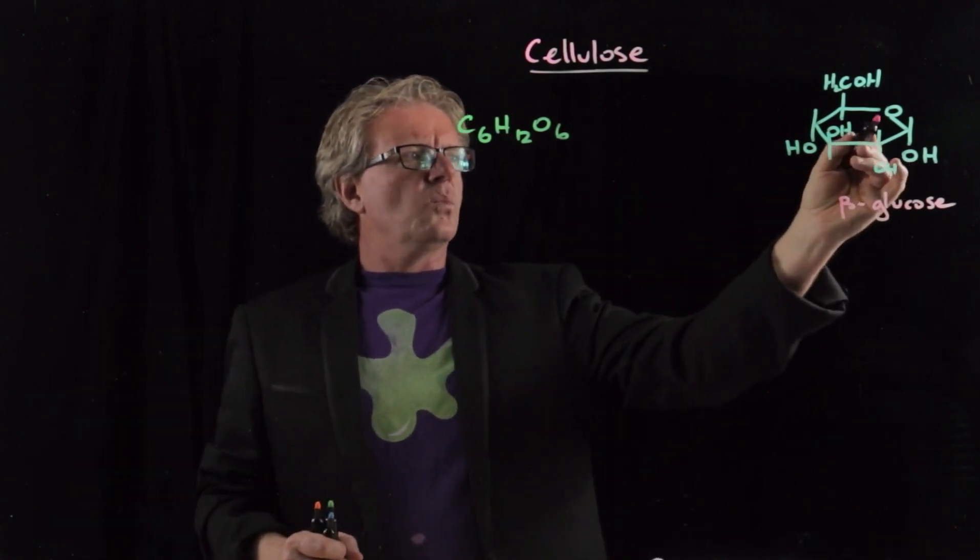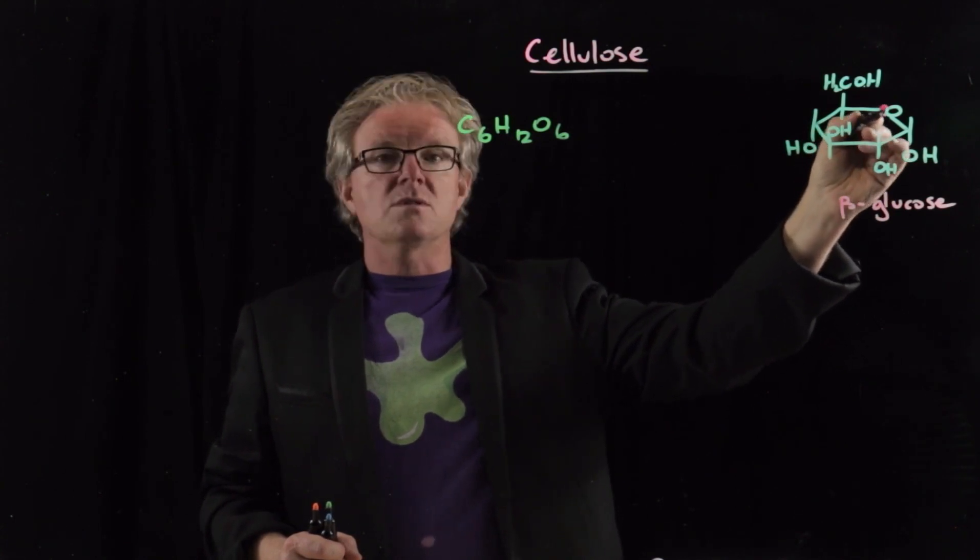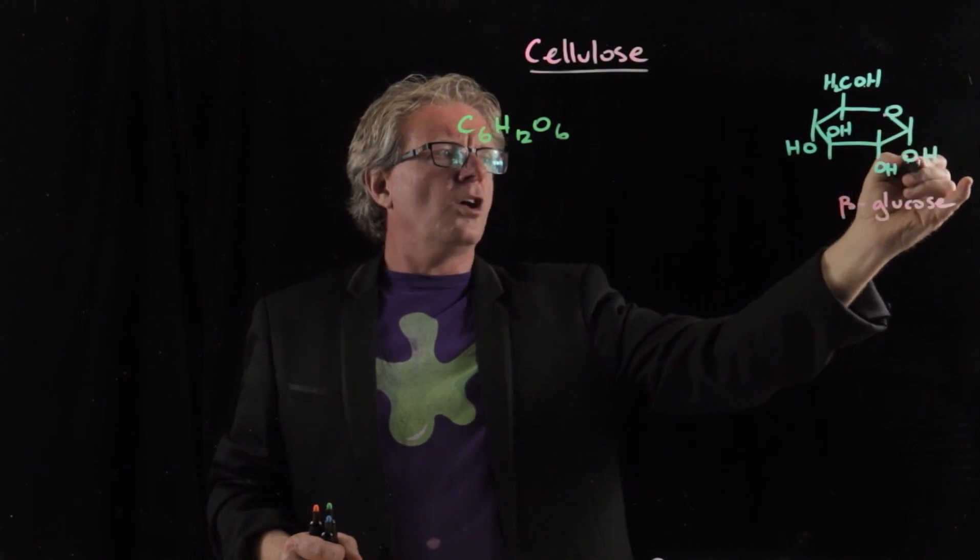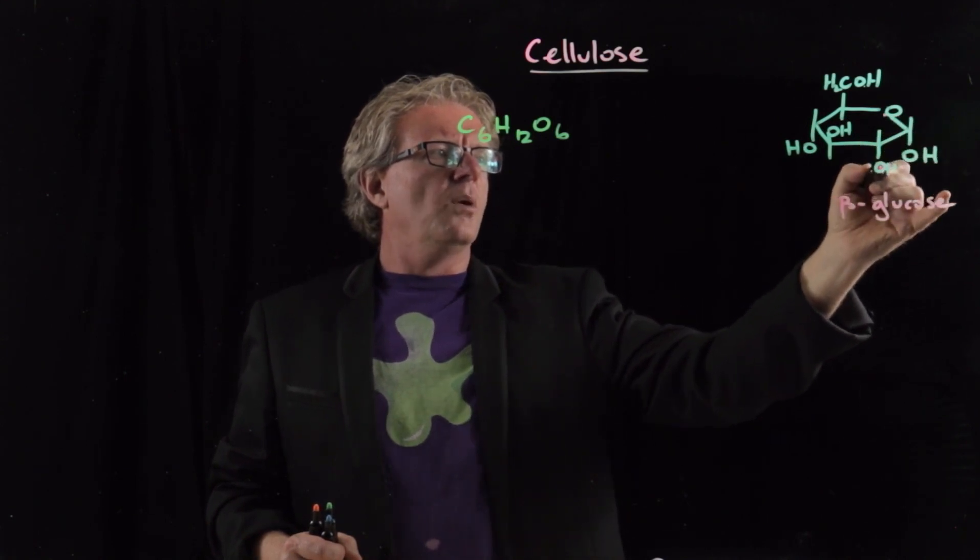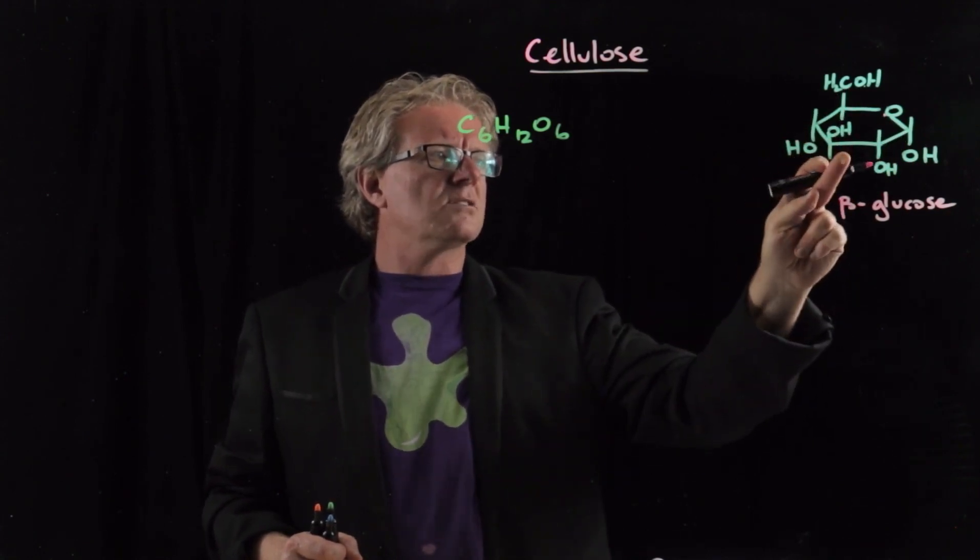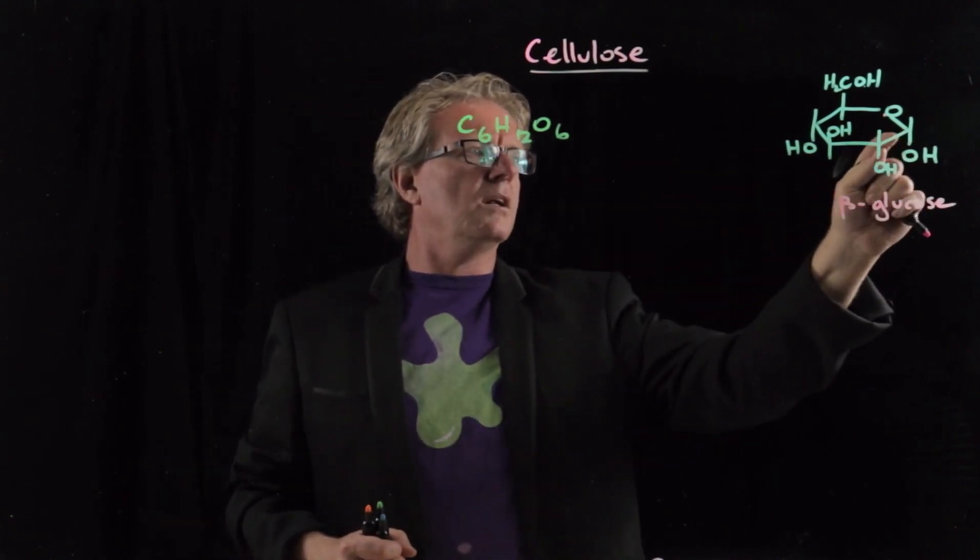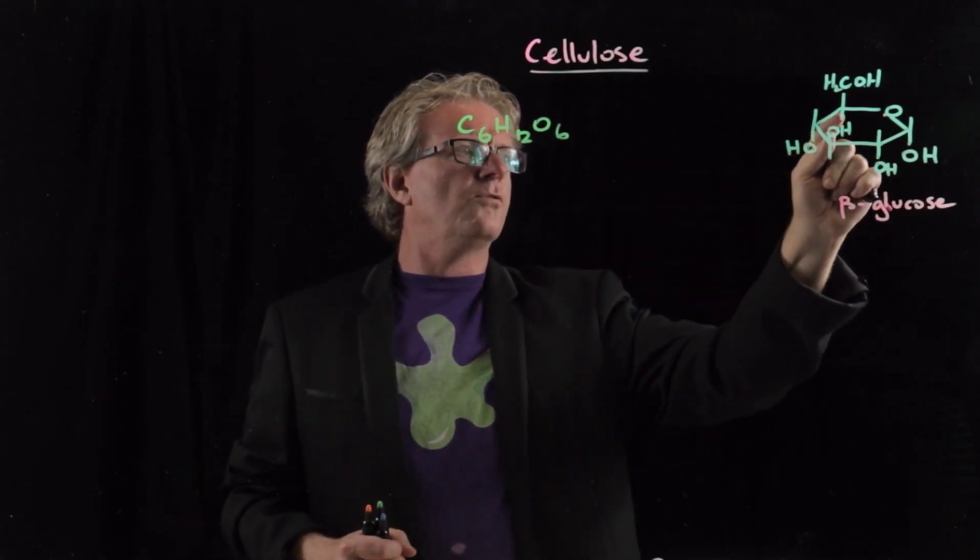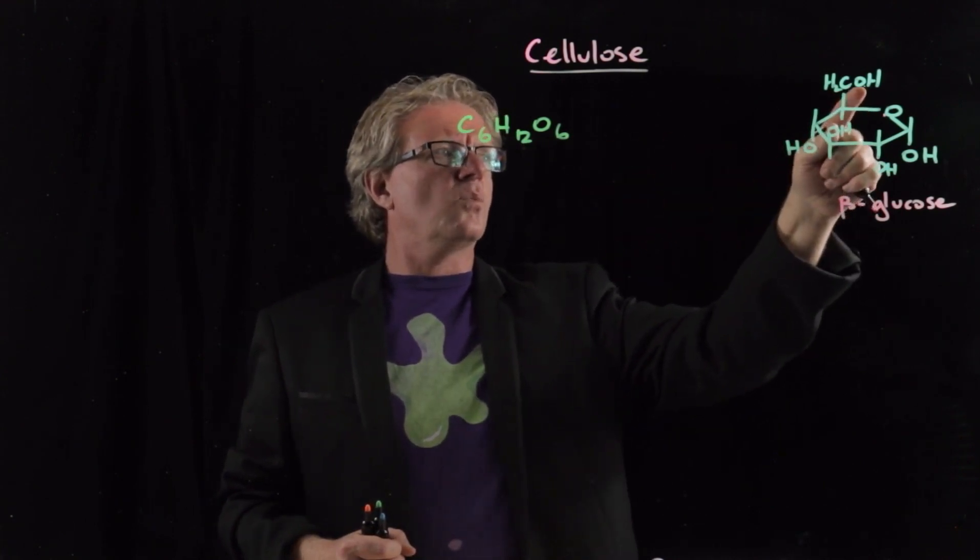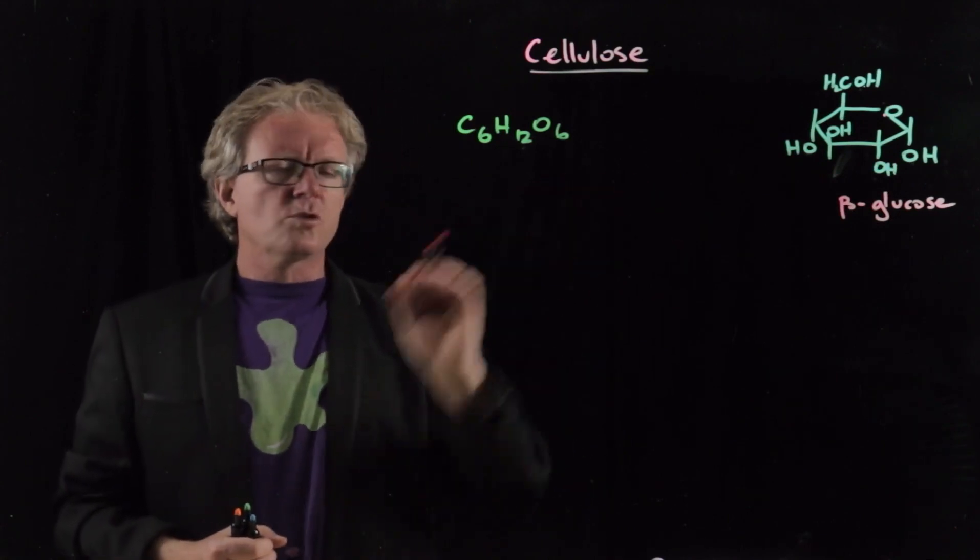With the ring form you can see that one oxygen is in the ring structure itself. Then you have a hydrogen up here, an OH group down there, OH, hydrogen, all the way around. If we count the carbons, you've got 6: 1, 2, 3, 4, 5, 6. Twelve hydrogens and six oxygens. That's glucose.